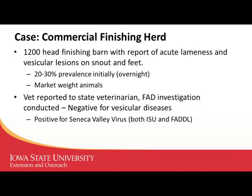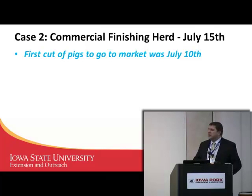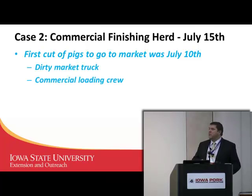The veterinarian was called, reported to state and federal veterinarians, and an animal disease diagnostician was sent in to collect samples. They were negative for vesicular diseases. We had a Seneca Valley virus PCR in a research lab at Iowa State, so we tested them at the same time samples went to the lab at Plum Island — both were negative for everything except Seneca Valley virus. During the disease investigation, we found that the first clinical signs were on July 15th, and on July 10th — five days earlier — they had taken the first cut of market pigs out to slaughter.